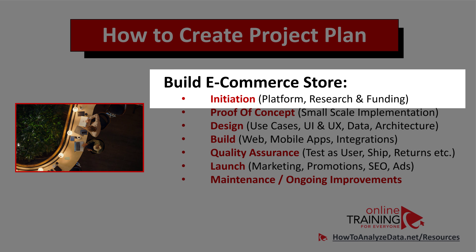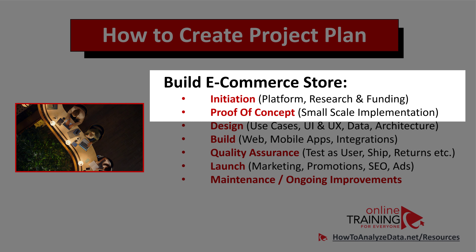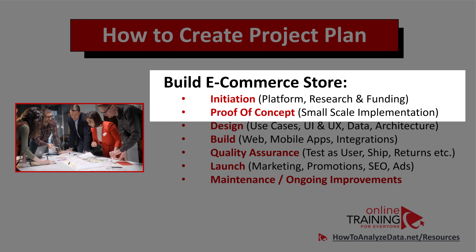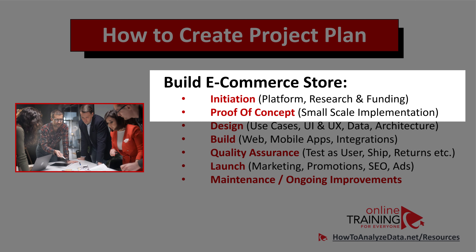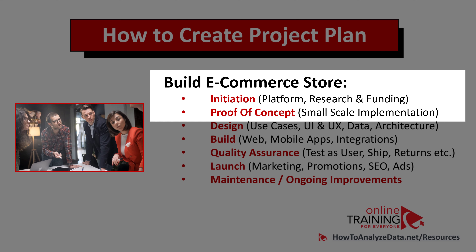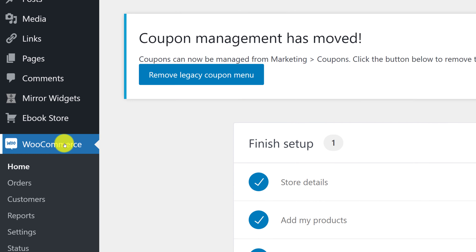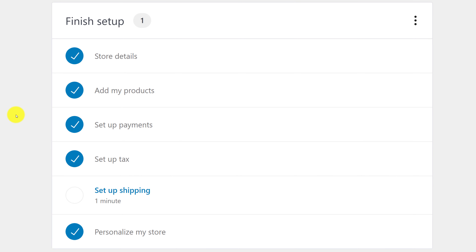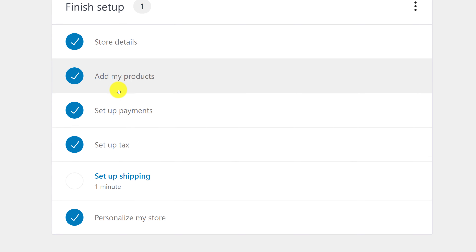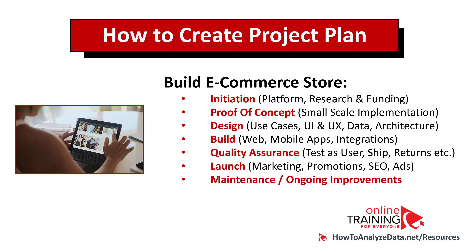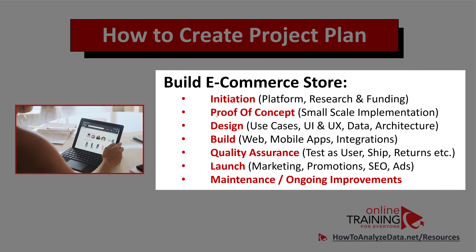During the proof of concept phase, you do a small-scale implementation. For example, if you're building an e-commerce store, you might go live with a small store selling just 10 products instead of 100, or selling the full range but presenting it to a smaller list of customers. I'm in WordPress right now and I have access to the WooCommerce plugin. Finishing the store setup might be the proof of concept — to set up a successful store you need to define store details, add products, set up payment methods, set up taxes, and personalize your store. Often, the capabilities of a plugin like WooCommerce will define the tasks of what you need to do for the particular store.